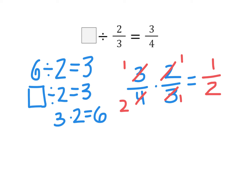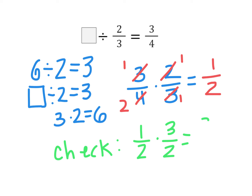Now I can go back and check to make sure that's accurate. Our check is putting 1 half into the problem. We have 1 half divided by 2 thirds, which we know is going to be times 3 halves. When I do that problem, I get 3 fourths. So I know that I'm correct.